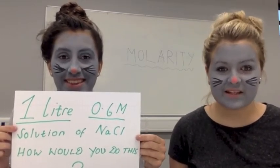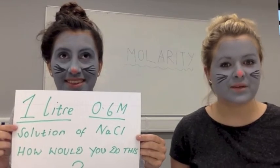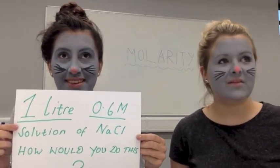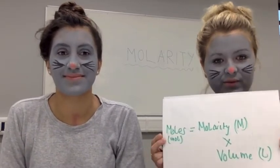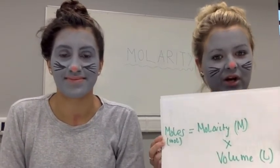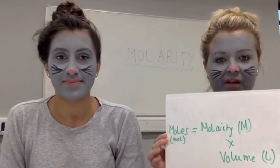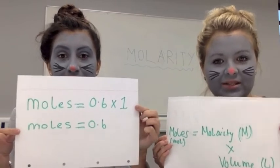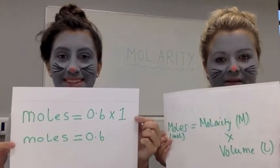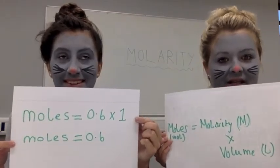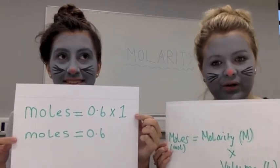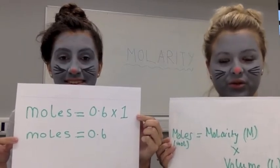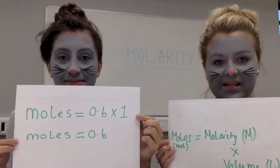To do this, we need to think back to both of the equations previously discussed in our videos. Think back to equation 2: moles equals molarity times volume. We know that the molarity is 0.6 and the volume is 1 litre, so multiplying 0.6 by 1 gives us the total number of moles, which is 0.6.